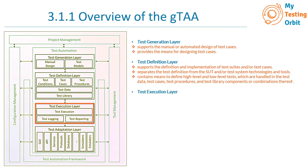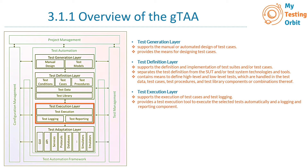The test execution layer includes test execution, test logging, and test reporting. This is the layer in the generic test automation architecture that supports the execution of test suites. We have defined the test suites earlier, and in this layer we execute them. It also provides test logging and reporting, and includes a test execution tool to execute selected tests automatically.